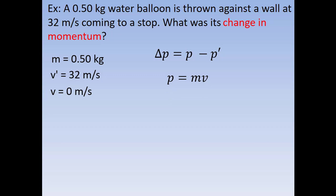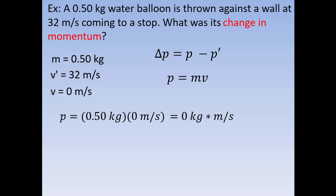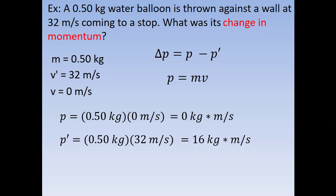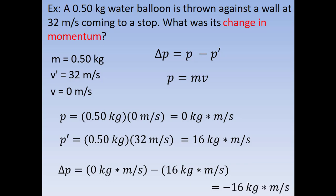Yes, we can. This is where physics gets really interesting. We know that momentum is equal to mass times velocity. The final momentum is mass times the final velocity, and since it came to a stop, the final velocity is zero, so the final momentum is zero kilogram meters per second. For the initial momentum, we still have a mass of 0.5 kilograms moving at 32 meters per second, so the initial momentum was 16 kilogram meters per second. Now we subtract: final was zero, initial was positive 16, so our change in momentum is negative 16 kilogram meters per second.